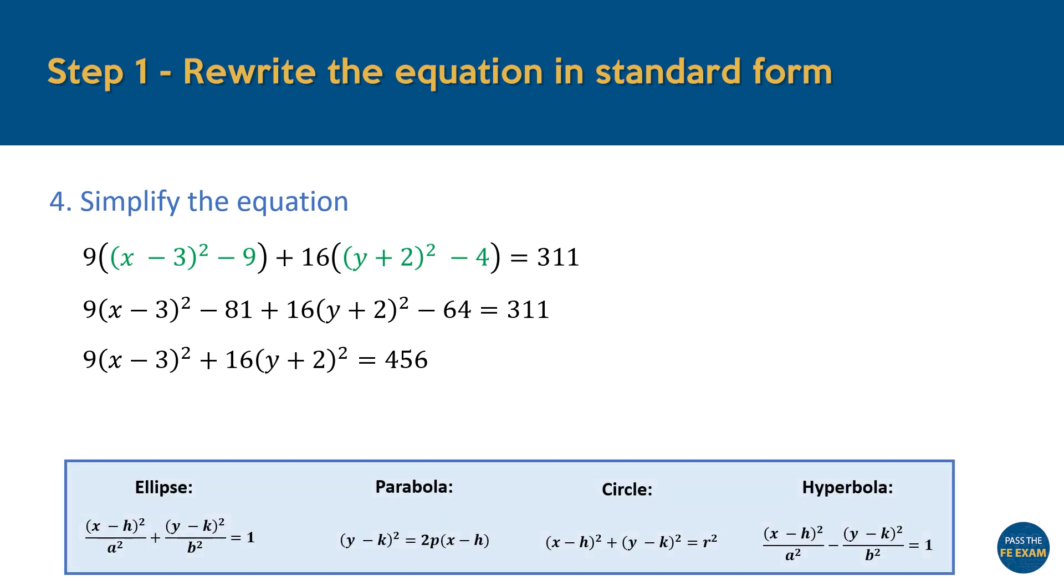When we compare this result to the standard forms of conic section equations, we can clearly see that it matches the equation of an ellipse. If we needed to determine the values of A and B in the standard form of the equation, we could divide the entire equation by the constant on the right-hand side to normalize it. However,